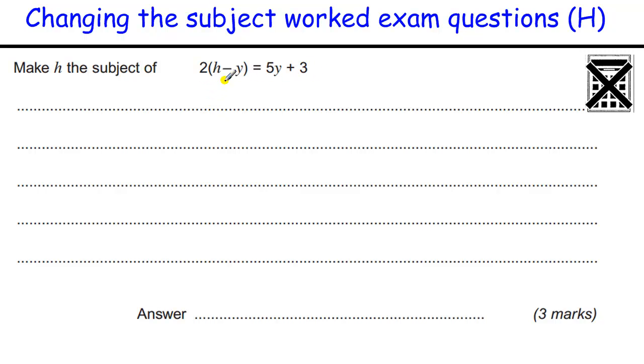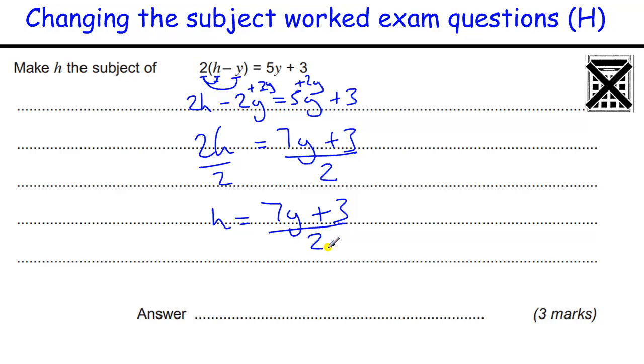Okay, one with a bracket in to start, we're trying to get this H on its own, so we need to multiply out the brackets, so we've got 2 times H, and then we've got 2 times minus Y, which is minus 2Y. Then we need to add 2Y to get 2H equals 7Y plus 3, and then we divide by the 2. You could divide individually, but it's much easier just to leave it as 7Y plus 3 over 2.